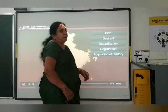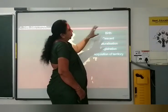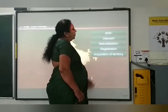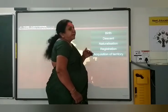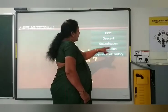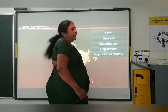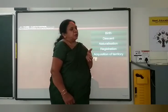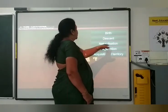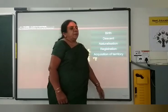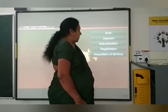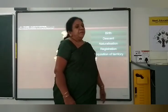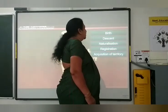The five ways to acquire citizenship are: first, by birth — you are born here in India, so you acquire citizenship naturally. Second, by descent — if your parents are from here, you can get citizenship through your parentage. Third, naturalization — for example, if your father is from America and your mother is from India, he can acquire citizenship here through naturalization. Fourth, registration — if you want to become a citizen of India and have stayed for five years, that is called registration. Fifth, acquisition of territory — you can get citizenship through acquiring property or territory.